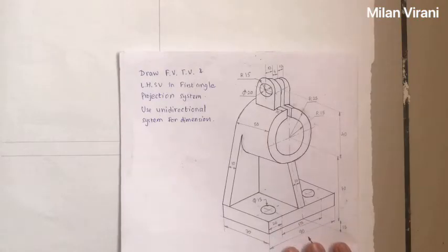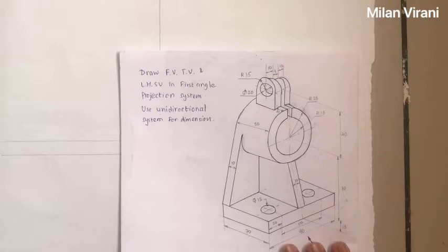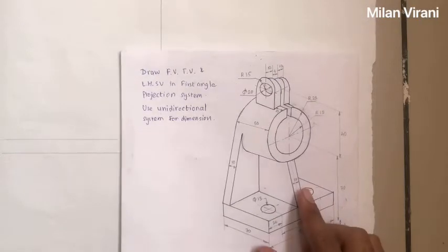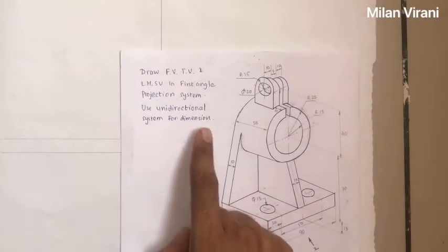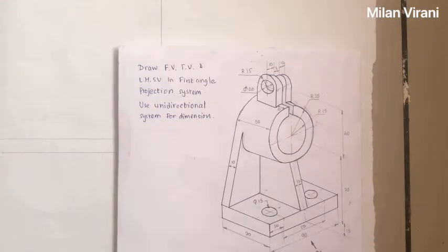Draw front view, top view, and left hand side view using first angle projection method of the given isometric 3D view. Use unidirectional system for dimensioning.